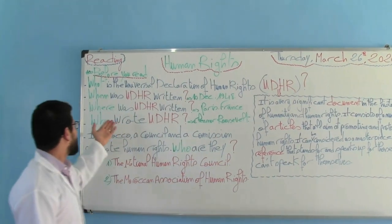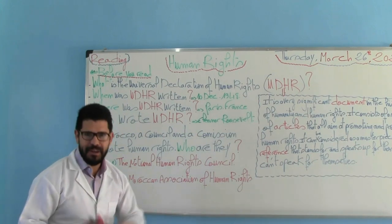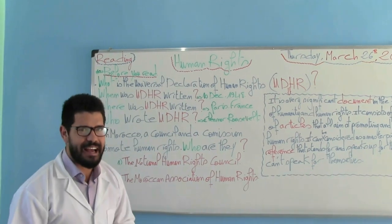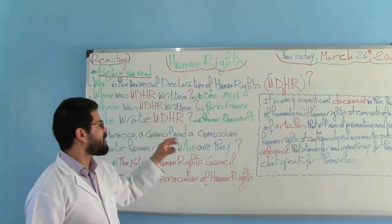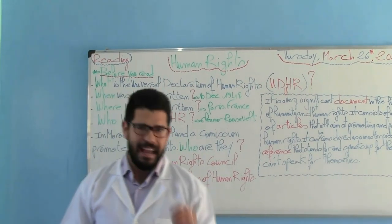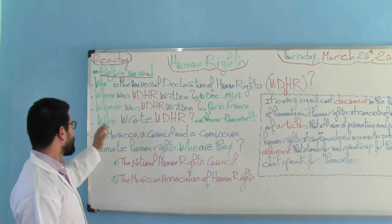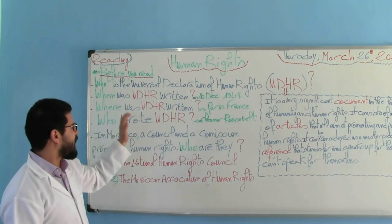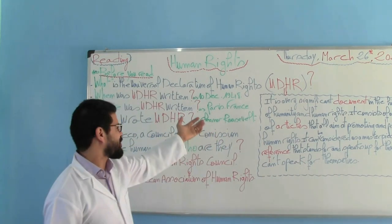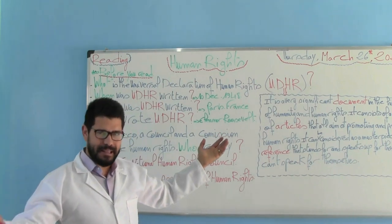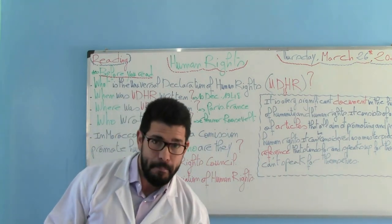As far as question number two is concerned: when was the UDHR written? We are talking about the timing — the year in which this document was written. It was written on December the 10th of 1948. Remember, the year is very important — it was written in 1948. Question number three: where was the UDHR written? It was written in an administrative capital of a European country whose name is France — Paris, of course.